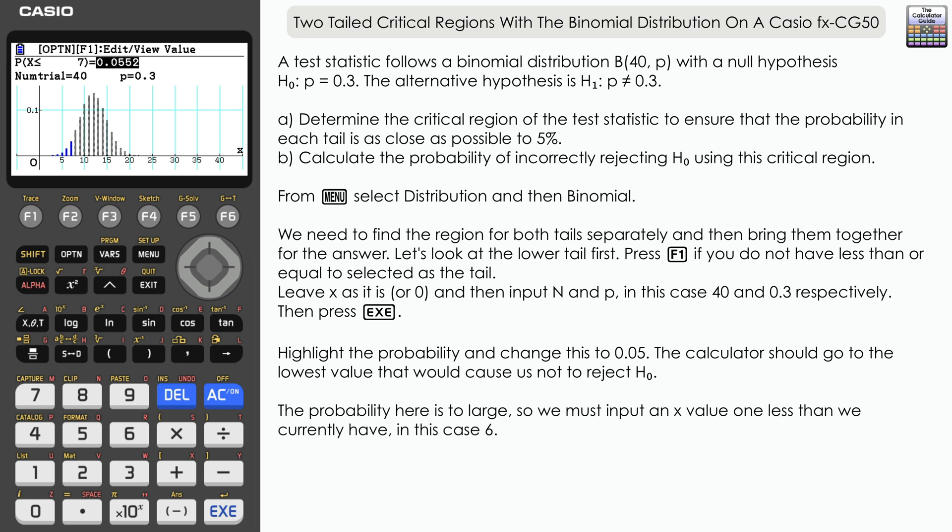For the lower tail, we need to go one less to get the actual significance level and define the critical region. So we're going to enter 6 here, and you can see the probability is now 0.0237.